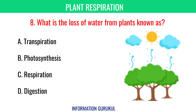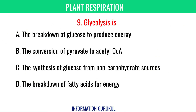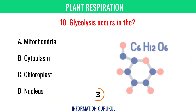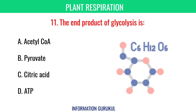What is the loss of water from plants known as? Transpiration. Glycolysis is the breakdown of glucose to produce energy. Glycolysis occurs in the cytoplasm. The end product of glycolysis is pyruvate.